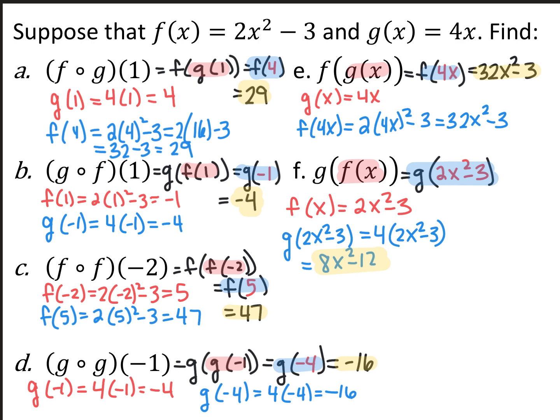f composed with g of x: I take g of x, which is 4x, and plug that into f of x — every time I see an x in f of x, I replace it with 4x — and I end up with 32x squared minus 3. This gives you a function that automatically does g first and then f afterwards, instead of having to do it in two steps.